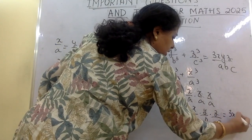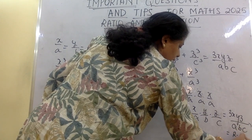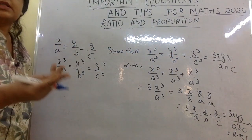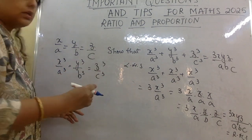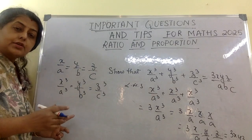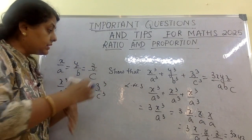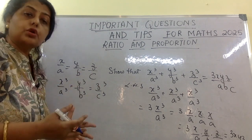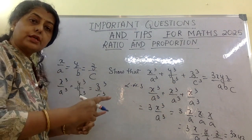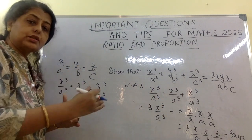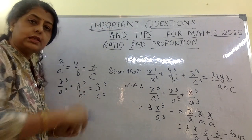That simplifies to 3 · (x/a) · (y/b) · (z/c), which equals 3xyz/abc — and that is the RHS. Hence proved. It looks easy but the calculation can trip you up; doing it systematically and fast without writing too much is the key.